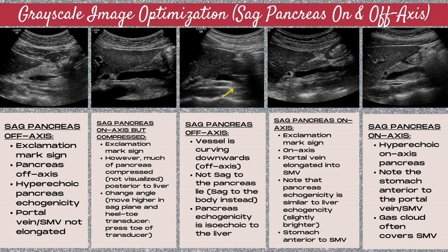You can also see the stomach anterior to the SMV. In the far right image, we have another on-axis sagittal pancreas — this is a hyperechoic pancreas. Note the stomach and the shadowing anterior to the SMV. It's important to note that when imaging the sagittal pancreas, a gas cloud from the stomach often covers the SMV. Note also in this example that the portal vein into the SMV is nicely elongated, and there's clear pancreatic tissue anterior to that portal vein.